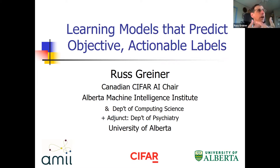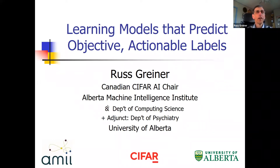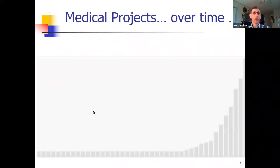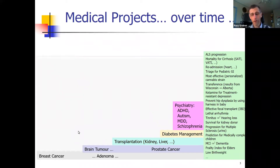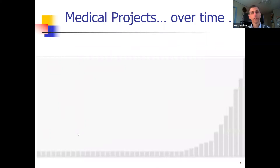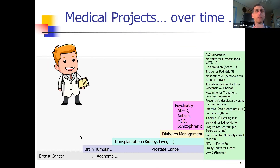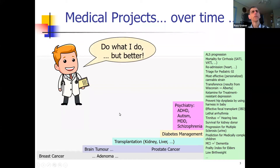I'm going to talk about motivating the challenge of learning objective, actionable labels. Let me give some context: I've worked in machine learning for about 40 years. The last 20 years I've been doing lots of work involving medical applications with many world-class clinician colleagues. What's interesting is that they want a tool that will do what they do, but do it better. A lot of this talk is trying to understand what that phrase means and how you can possibly go about doing what they do in a way that's better.